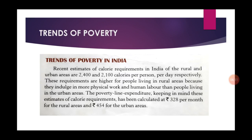Recent estimates of calorie requirement in India for rural and urban areas are 2400 and 2100 calories per person per day respectively. These requirements are higher for people in rural areas because they indulge in more physical work. The poverty line expenditure, keeping in mind these calorie estimates, has been calculated at rupees 328 per month for rural areas and rupees 454 for urban areas.